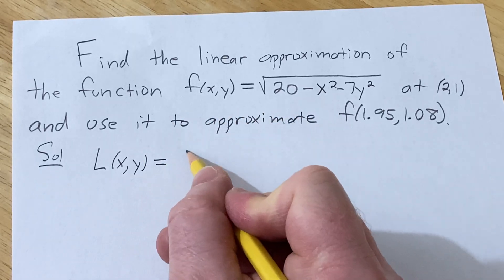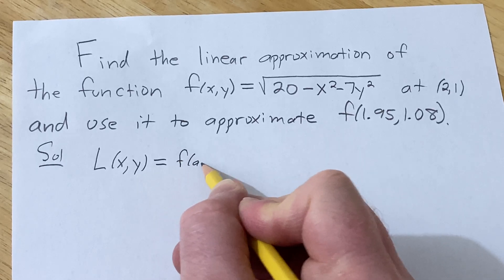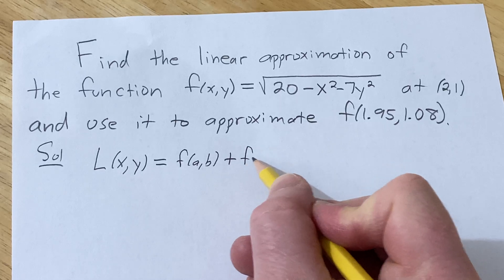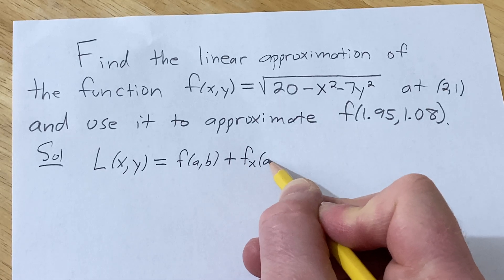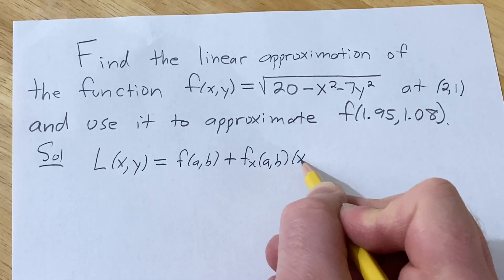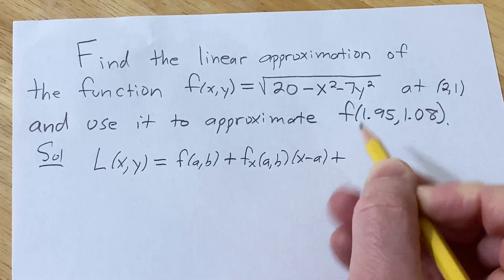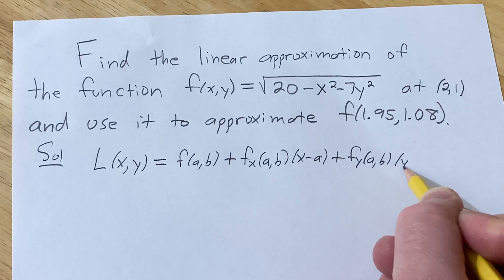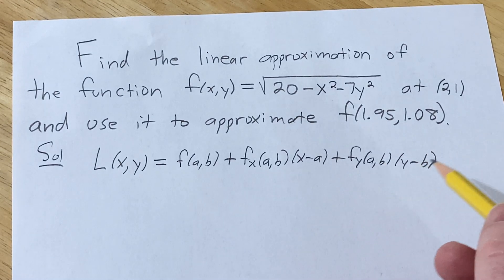It's L(x,y) = f(a,b) plus the partial with respect to x evaluated at (a,b) times (x-a) plus the partial with respect to y evaluated at (a,b) times (y-b). This is also called the linearization or the tangent line approximation.